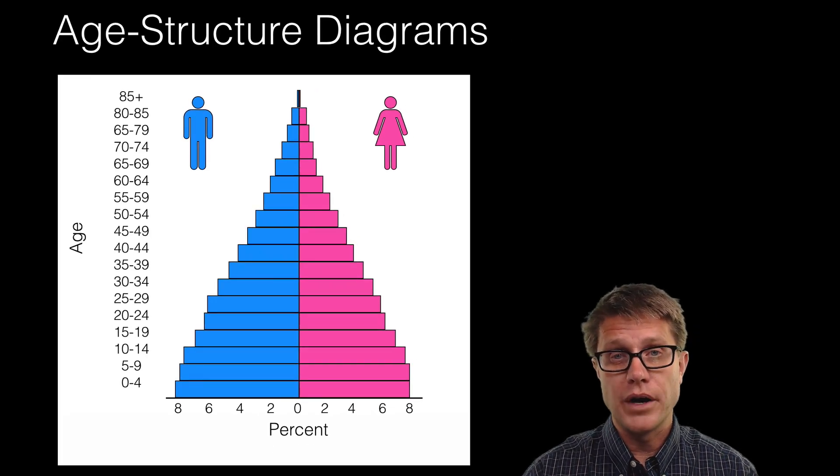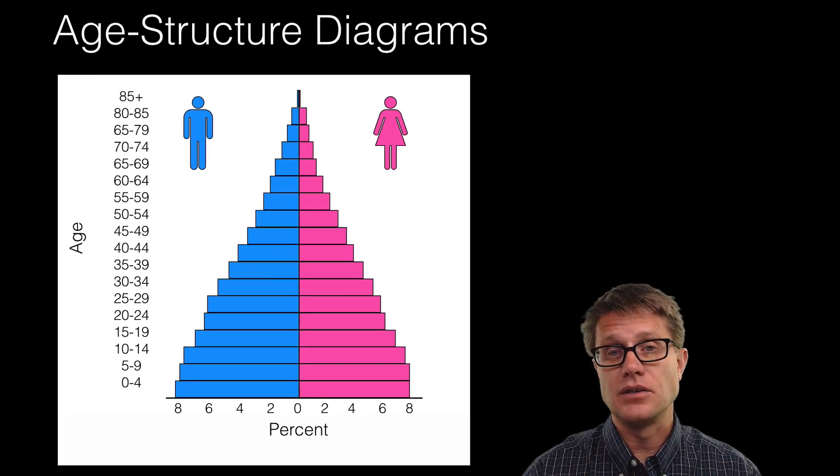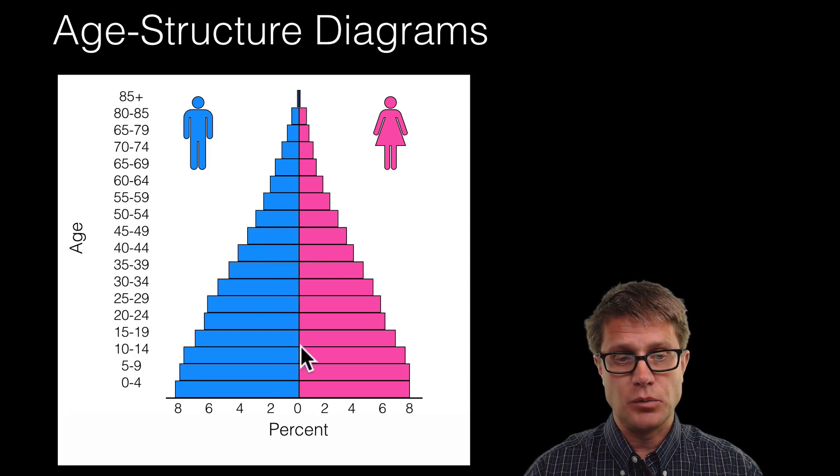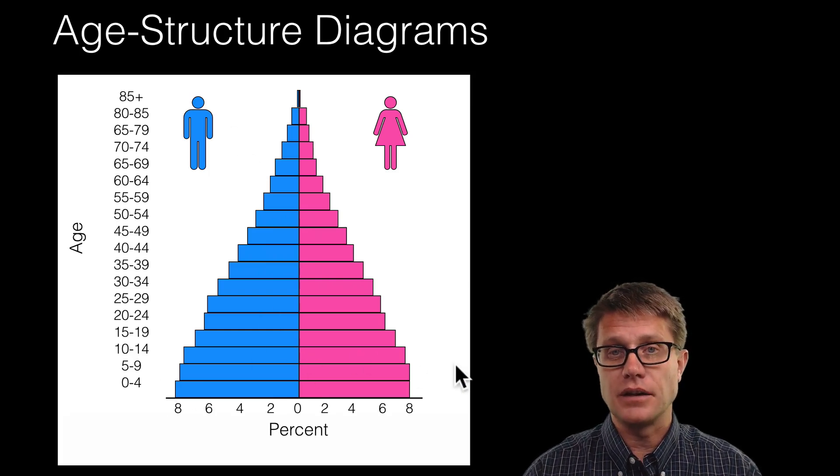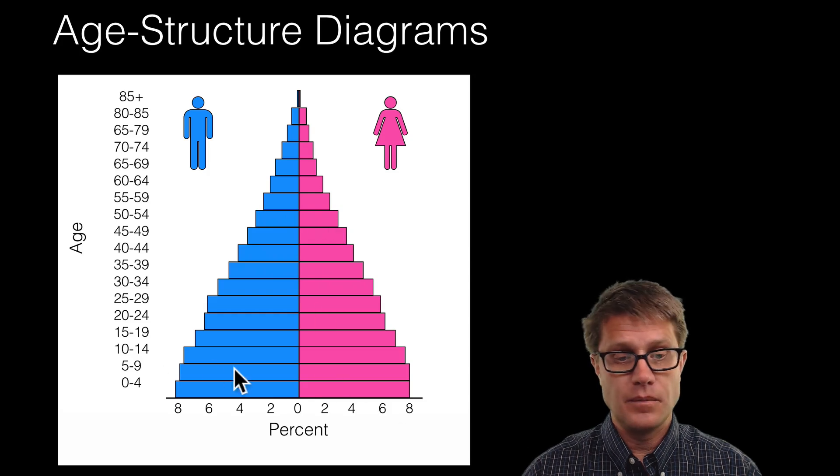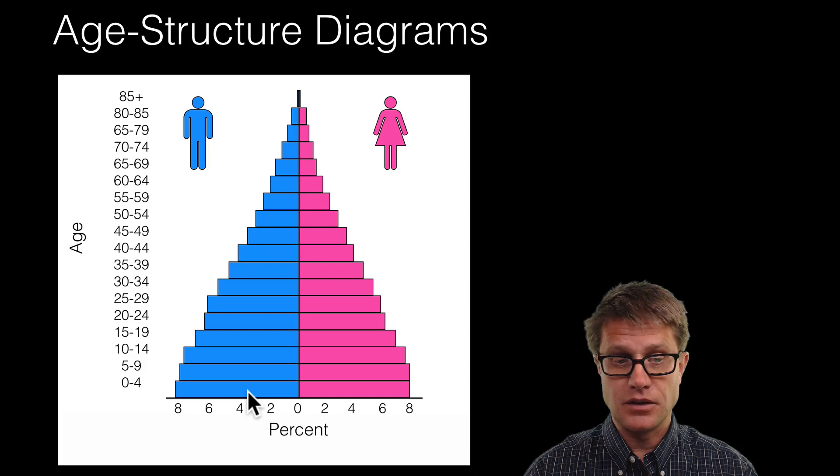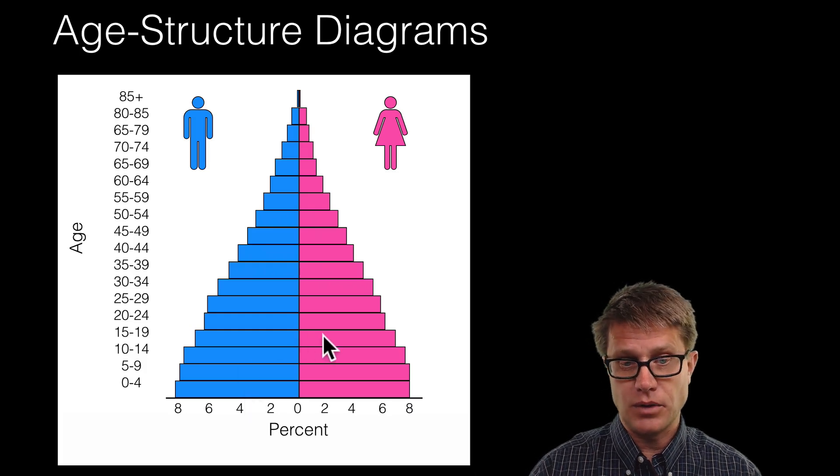A good way to look at where a population is and where it is headed is using something called an age structure diagram. And so on an age structure diagram we will put males on one side, females on the other. And then the percent they make up of the population.